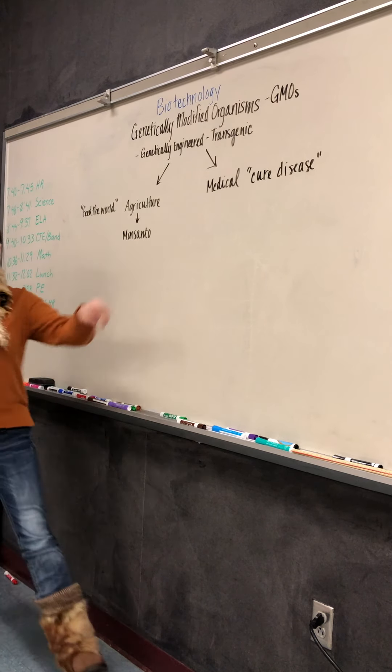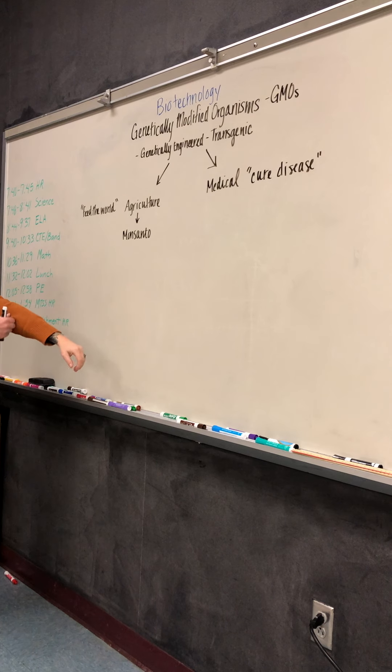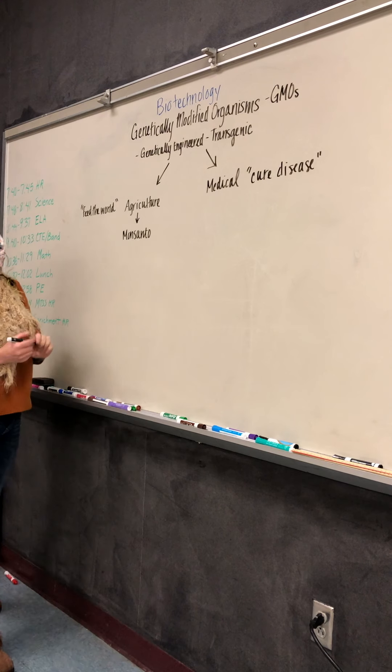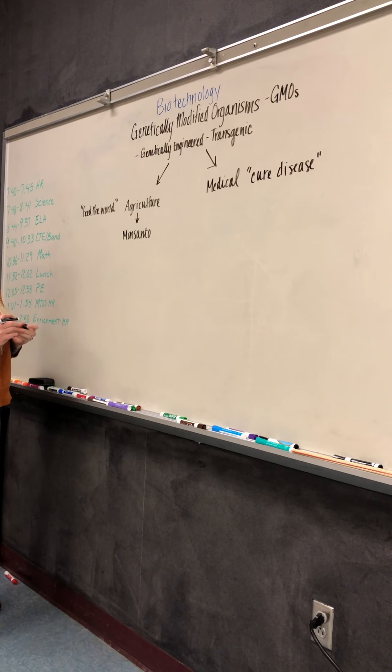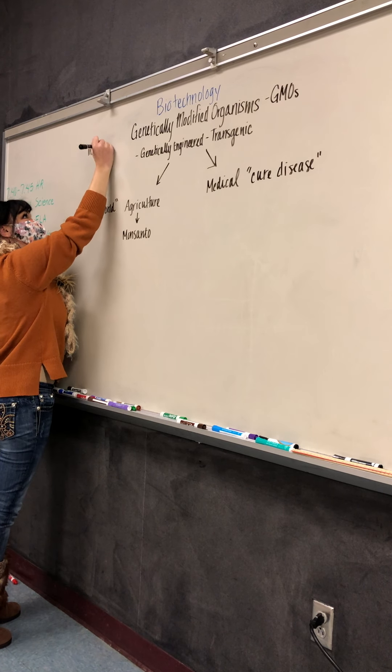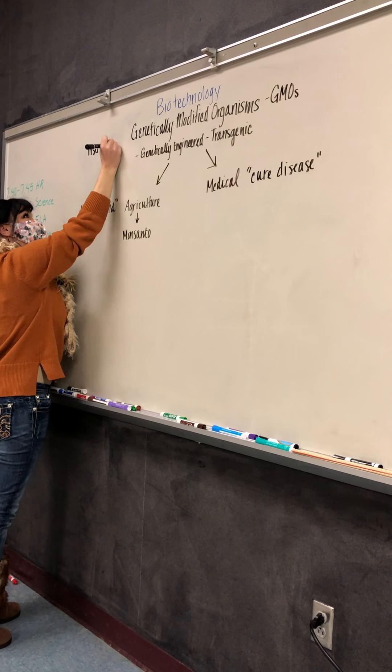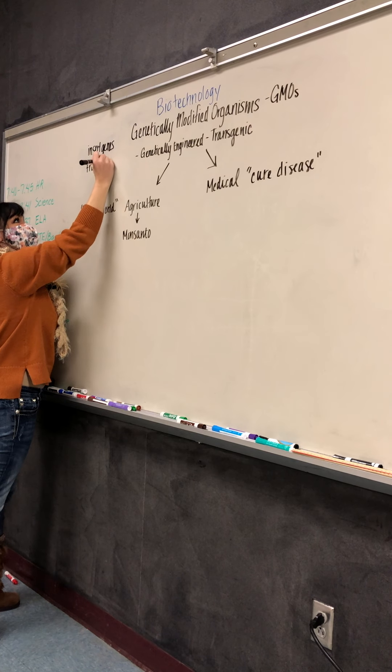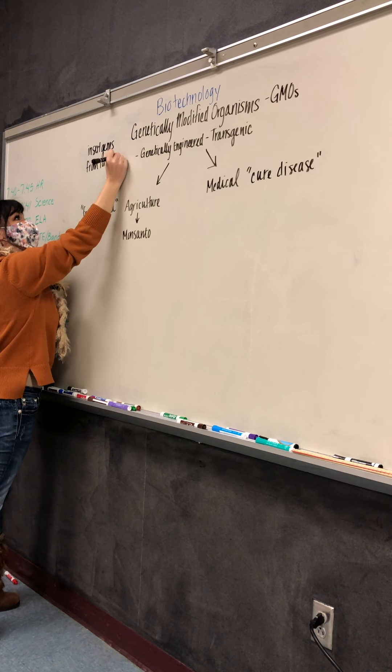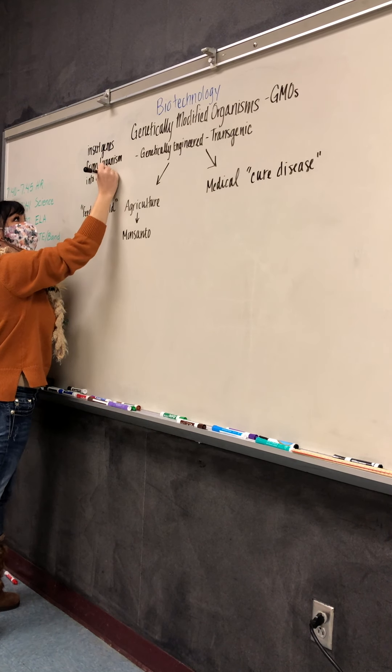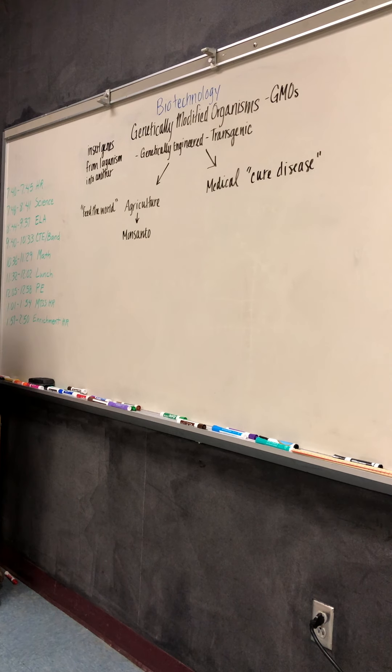So any type of GMO, that means genetically modified organism. That can be organism can be a plant or an animal. So it can be either one. And what they do is they actually insert genes, genetic information from one organism into another. This is not a natural thing. So they're genetically altering an organism.